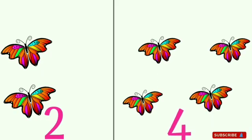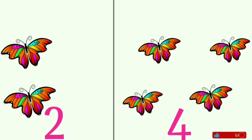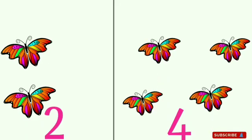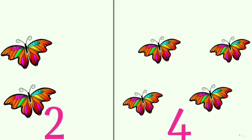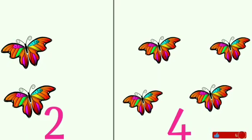Children, the first group has two butterflies and the second group has four butterflies. Now can you tell me which group has more butterflies and which group has less butterflies?